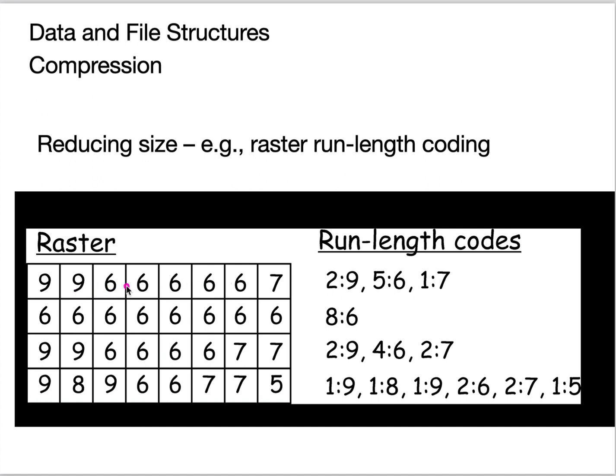And so I keep track of the length, two nines, five sixes, one seven. So I have six bits of information here that store eight. And so when I have long stretches that are the same, I can really get a lot of compression.